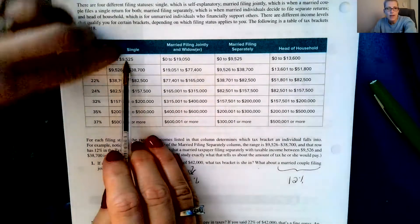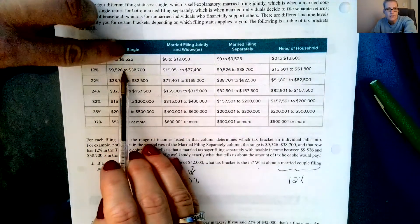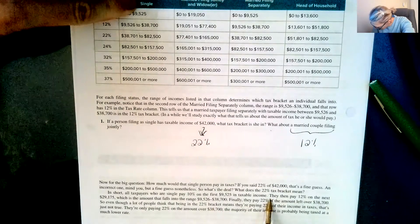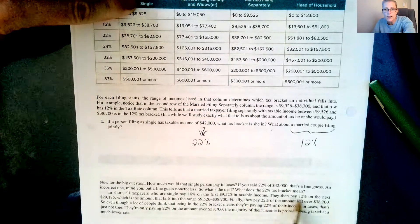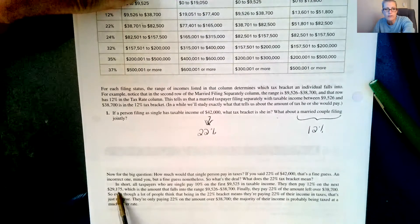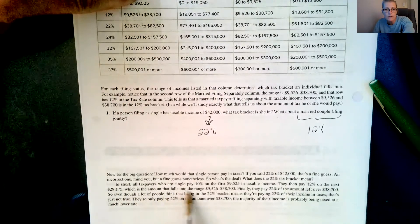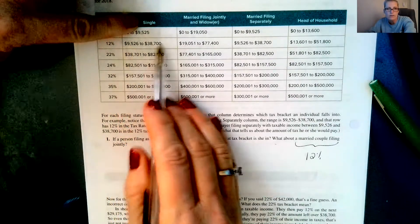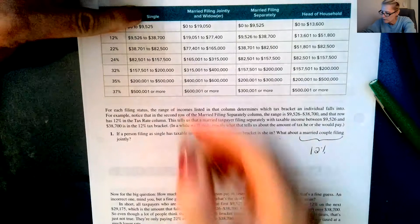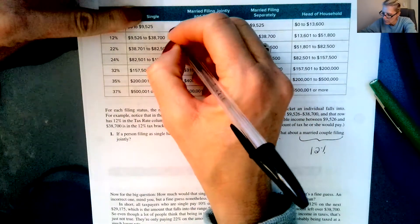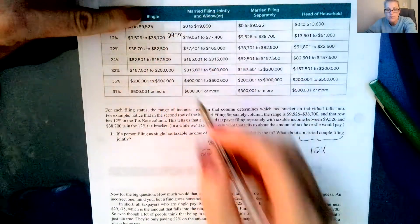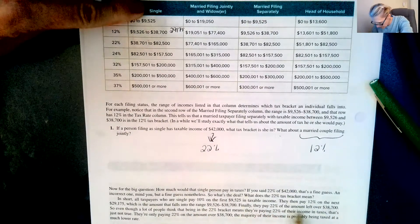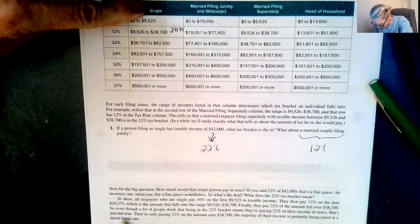So in short, all taxpayers who are single pay 10% on the first $9,525 in taxable income. That's right here. Then anything over that goes into the next income bracket. So they then pay 12% on the next $29,175, which is the amount that falls into the range $9,526 to $38,700. That is $29,175 difference. Finally, they pay 22% of the amount left over $38,700.